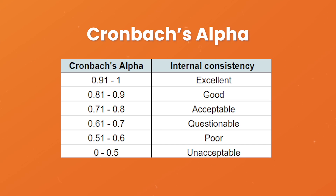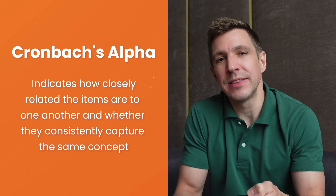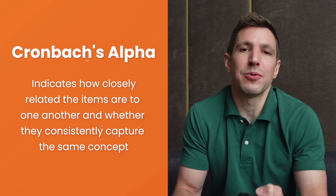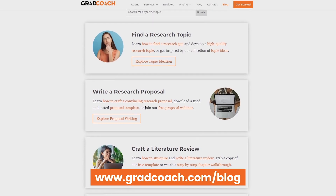As with validity, there are various types of reliability and various tests to assess it. A popular one for survey instruments is Cronbach's alpha, a statistical measure that quantifies the degree to which items within an instrument — for example, a set of Likert scales — are measuring the same underlying construct. Cronbach's alpha indicates how closely related items are to one another and whether they consistently capture the same concept. The technical name for this is internal consistency reliability.